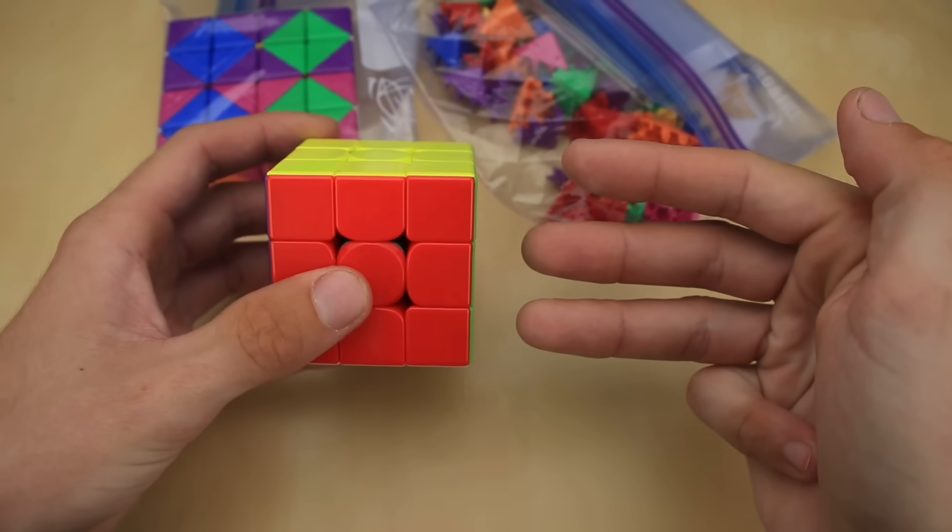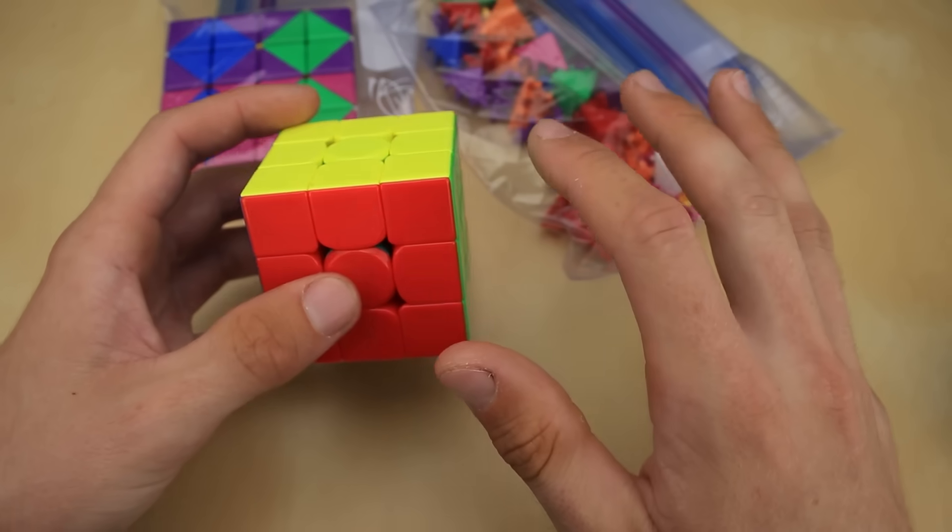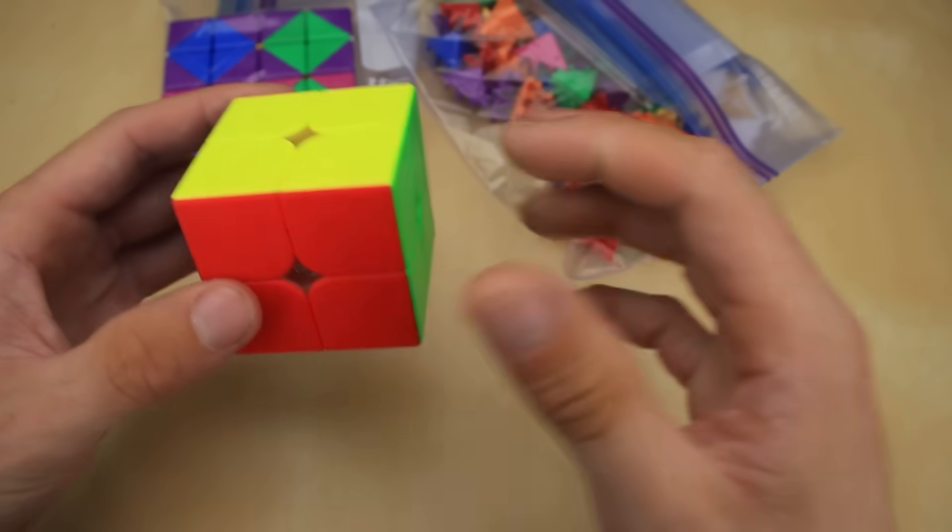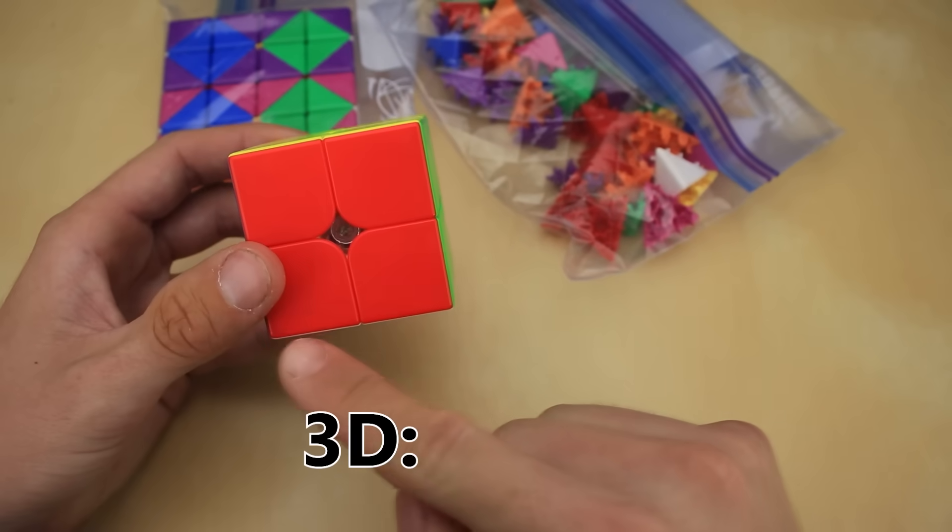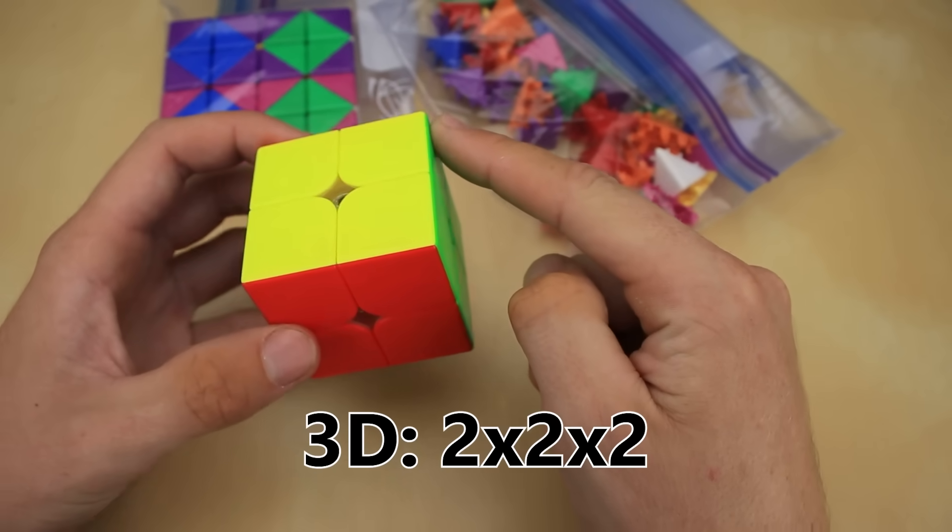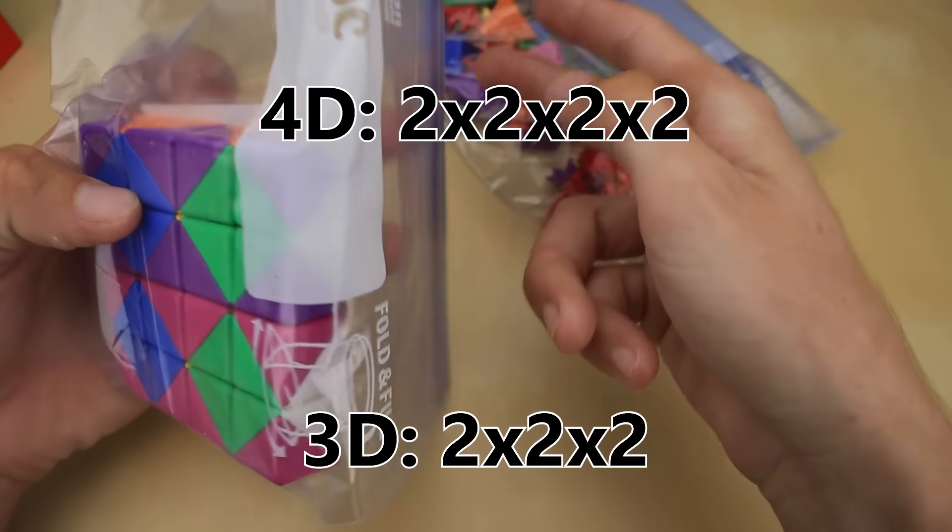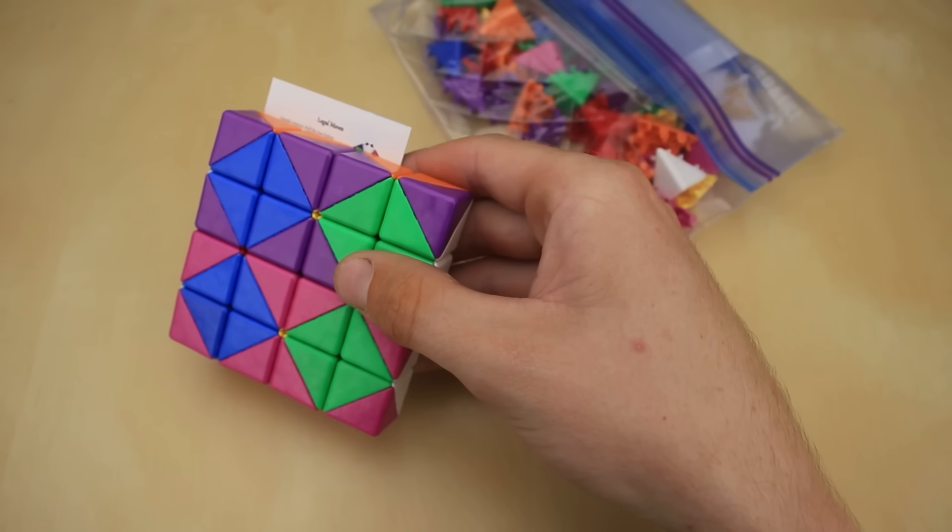She knew that the original version with three layers, like in the software, would be a little bit too complicated, so instead settled on a two-layered version. Of course, what I'm holding is a two-by-two-by-two, whereas what she created is a two-by-two-by-two-by-two. And here it is.